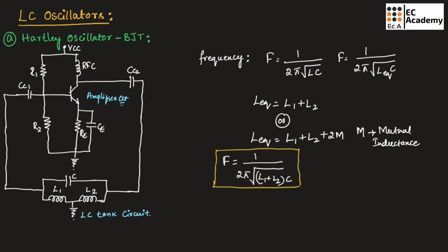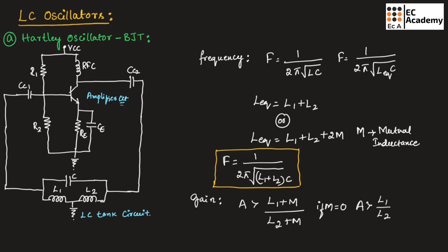This is the frequency of oscillation. Now let us find the gain. The gain of the Hartley oscillator should always be greater than (L1 + M) / (L2 + M). If mutual inductance is not given, meaning M = 0, then the gain should be greater than L1 / L2.